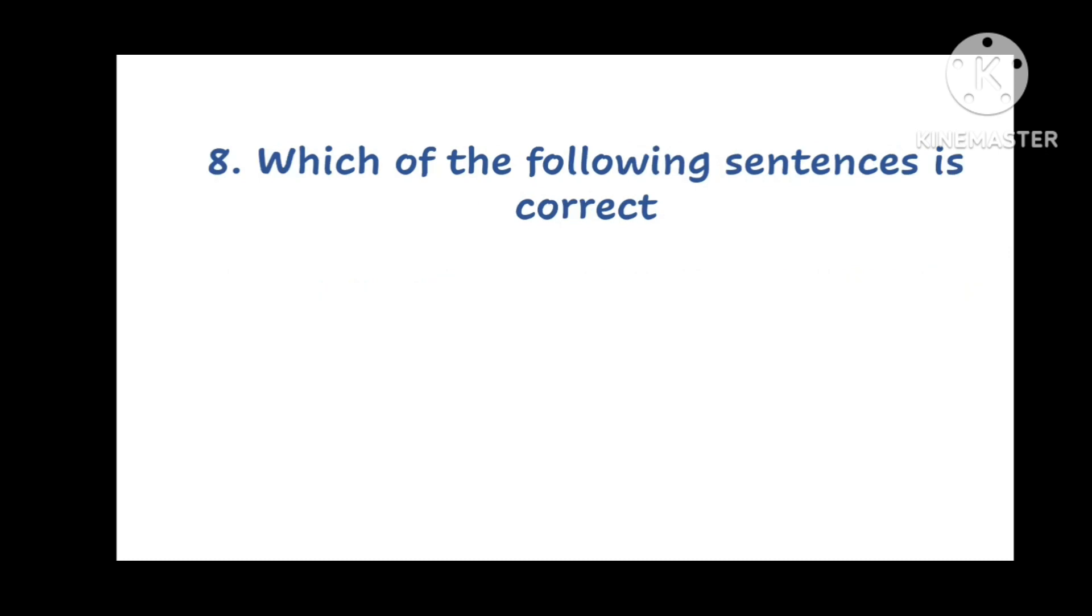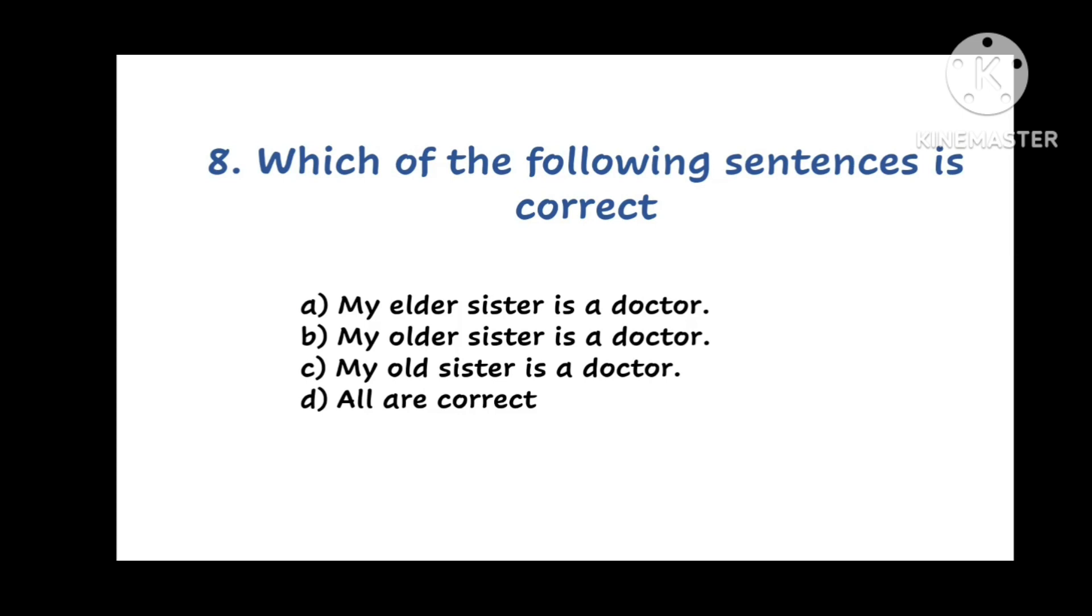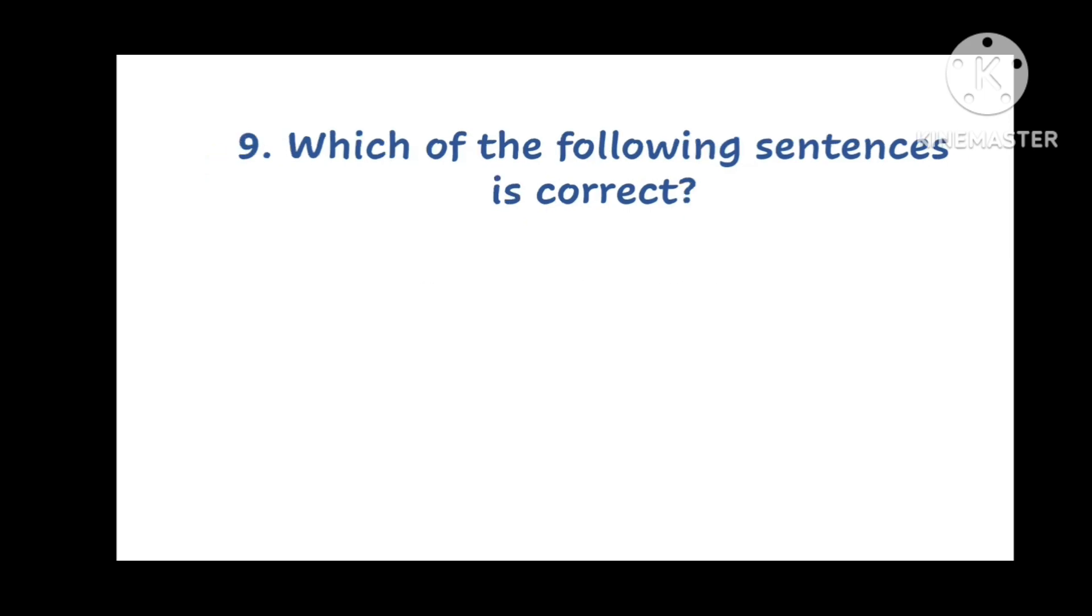Next question. Which of the following sentences is correct? You have to choose the correct sentence. Options are A. My elder sister is a doctor. B. My older sister is a doctor. C. My old sister is a doctor. Or D. All are correct.